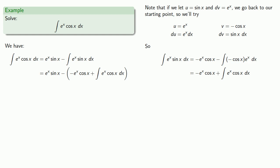And so we, wait a minute. This anti-derivative e to the x cosine x dx is exactly what we started with. So it looks like we've come in a big circle.